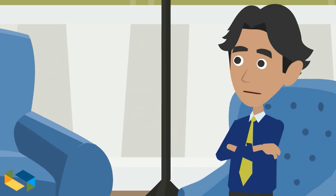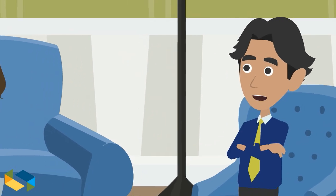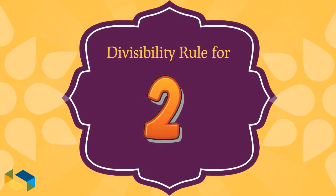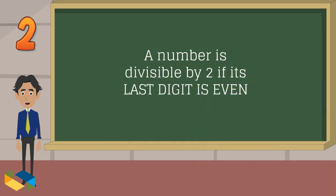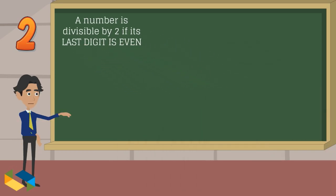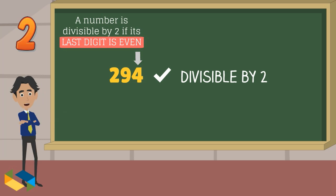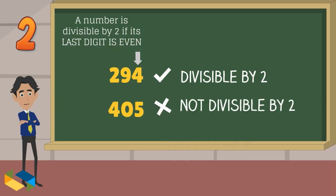Let's check out the rules for numbers 2 through 12. A number is divisible by 2 if its last digit is even. For example, 294 is divisible by 2 because 4, the last digit, is an even number. On the other hand, 405 is not divisible by 2 as its last digit, 5, is an odd number.